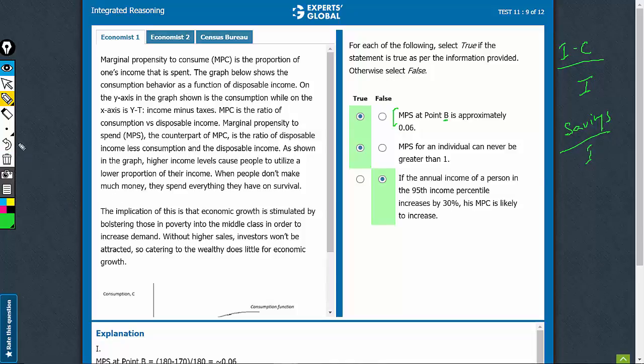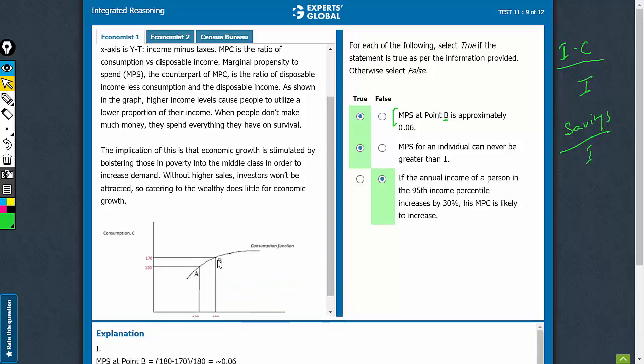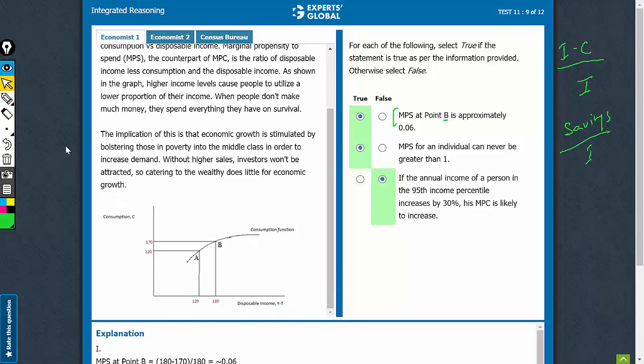Now let's look at what point B says. Point B, income is 180 here, so 180. Disposable income 180. Consumption 170 upon 180 again turns out to be 10 upon 180, which is approximately 0.06.